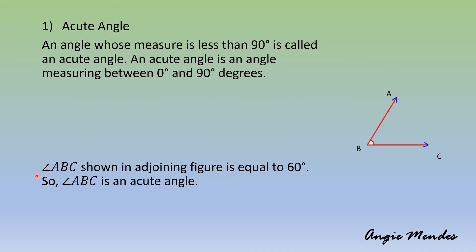An acute angle: an angle whose measure is less than 90 degrees is called an acute angle. An acute angle measures between 0 and 90 degrees. Here we have angle ABC which is equal to 60 degrees. Since the measure of this angle is less than 90 degrees, we say this is an acute angle. A simple way of remembering this is that acute angles are smaller angles.